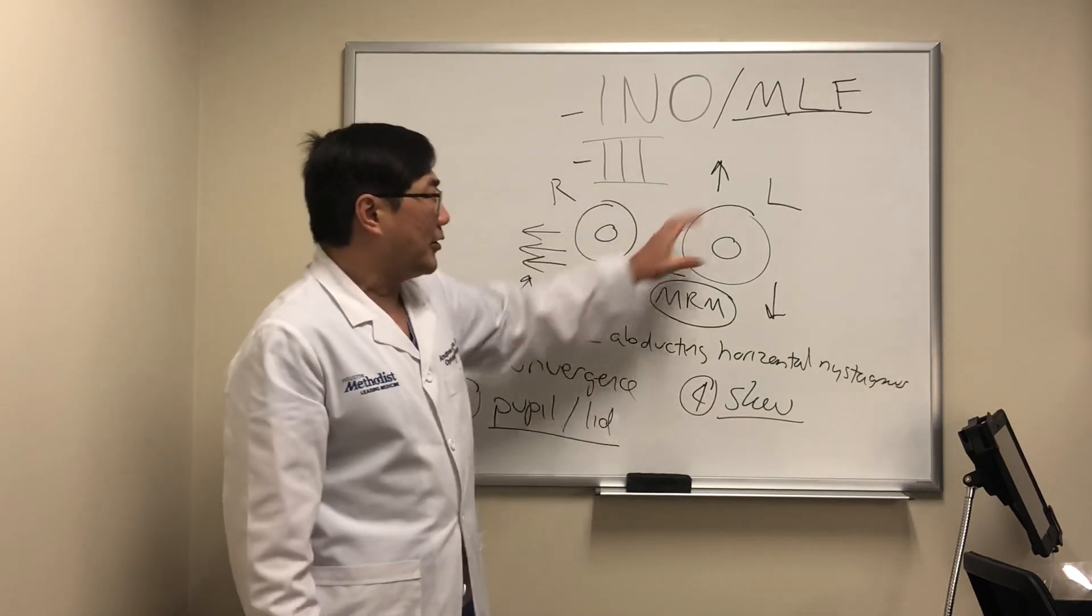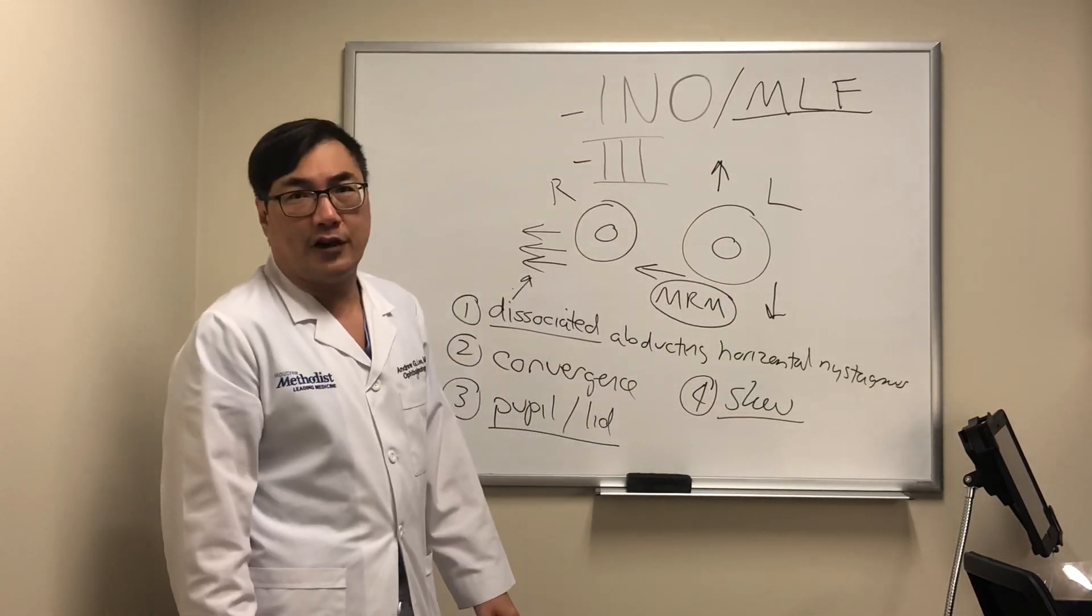In an INO, that might be a skew. In the third nerve palsy, that's going to be the other muscles that are involved, that are innervated by three.